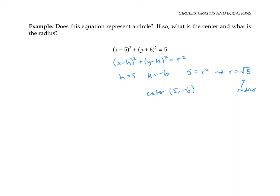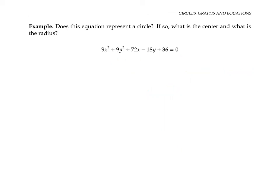So this is indeed the equation of a circle, which we could then graph by putting down the center and estimating the radius, which is a little bit more than two. This equation might not look like the equation of a circle, but it can actually be transformed to look like one.